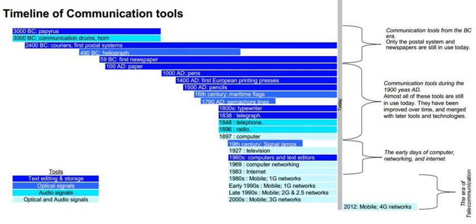1971 – Erna Schneider-Hoover invents a computerized switching system for telephone traffic. The 8-inch floppy disk removable storage medium for computers is introduced. 1975 – First list servers are introduced. 1976 – The personal computer market is born.